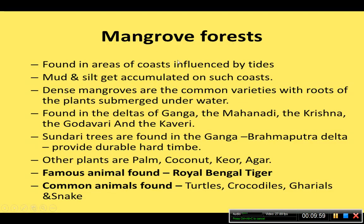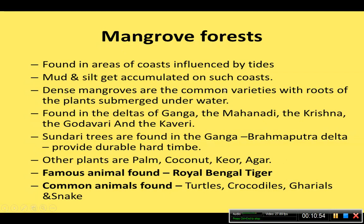Mangrove forests are found in areas of coast influenced by tides — the rise and fall of sea level. Mud and silt accumulate on such coasts when high tides bring water into the coastal region. Dense mangroves are the common variety here, with roots of the plant submerged underwater.